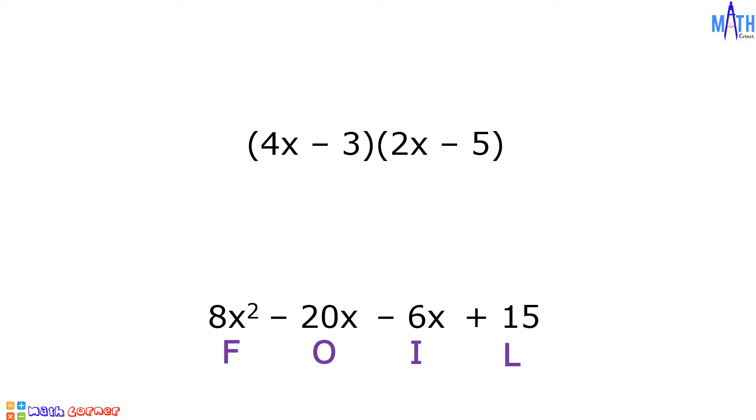And we have 8X squared minus 20X minus 6X plus 15. Since negative 20X minus 6X is equal to negative 26X, then we have 8X squared minus 26X plus 15. And this is the answer.